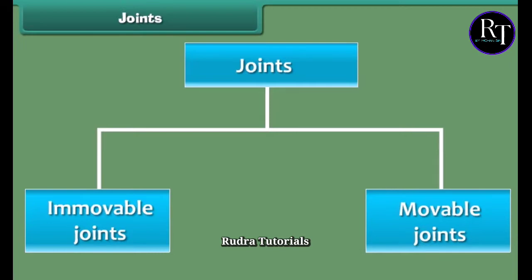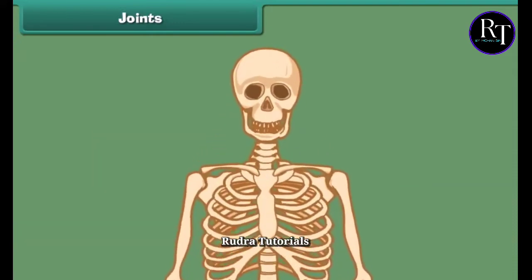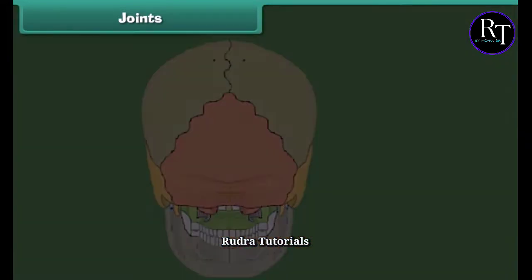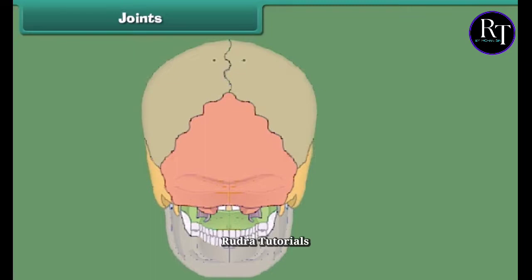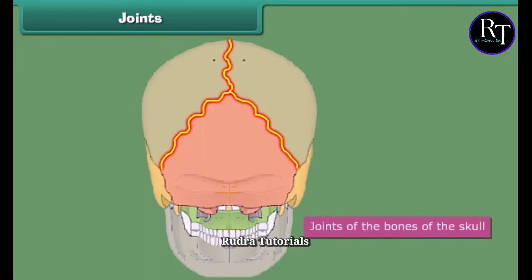Let us first discuss what immovable joints are. Immovable joints are the joints where no movement of the bones is possible. The joints of the bones of the skull are immovable joints.